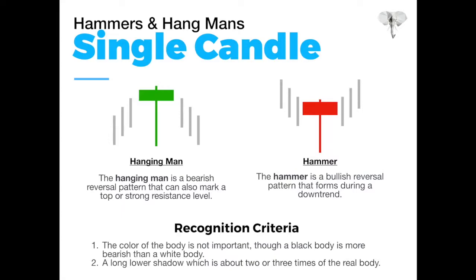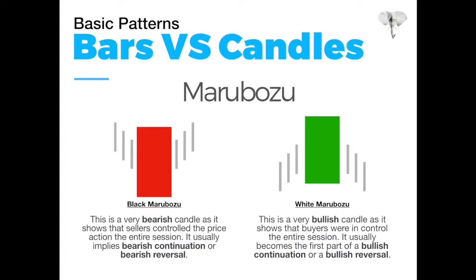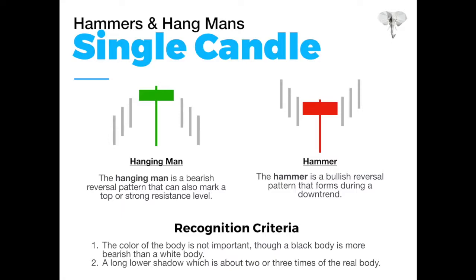Price starts getting a little indecisive in the market. A long shadow represents that price was going up in a bullish direction, hit a resistance zone, and then bears started coming in and testing that resistance zone, driving price back down. However, the bulls were still able to bring price up to its closing point. The color of these candles is not particularly important — for a bullish trend it's typically going to be a bullish candle, but the color doesn't necessarily matter all that much.